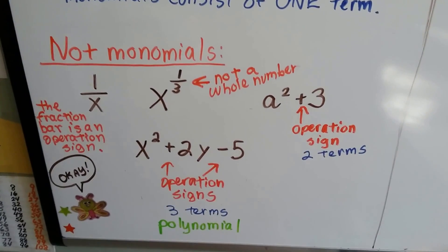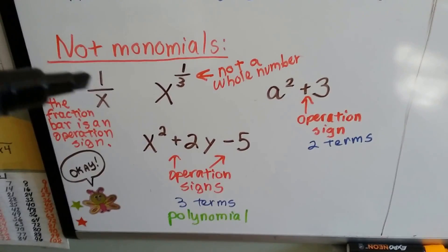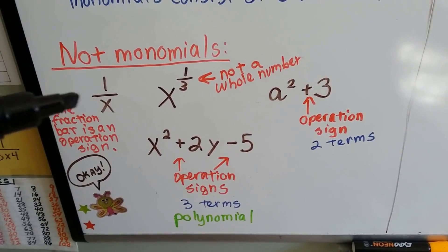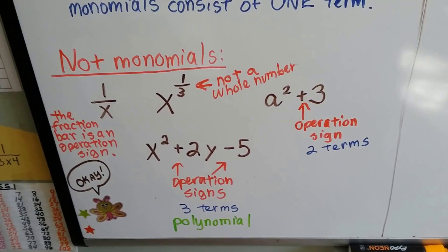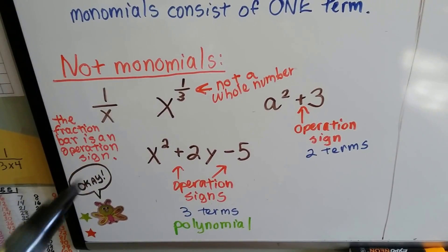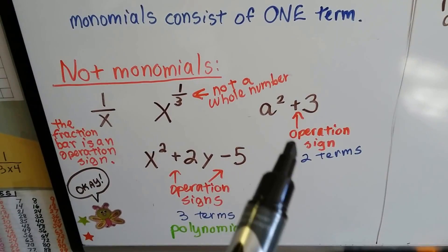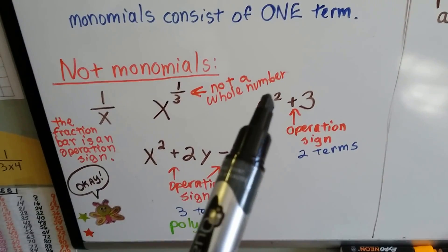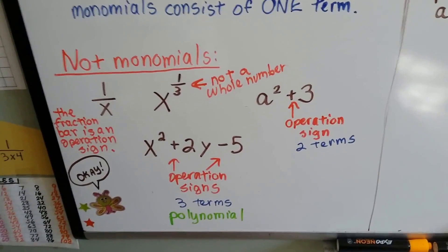Now, these are not monomials, and we've discussed this in the last video. 1 over x is 1 divided by x — that's an operation sign right there, and you can't have an operation sign in a monomial. That's a division sign. This is not a whole number exponent; that's an exponent of only one-third — that's x to the one-third power. This is a binomial because it's got two terms. There's an operation sign separating these two monomials, so this is a binomial with two terms.